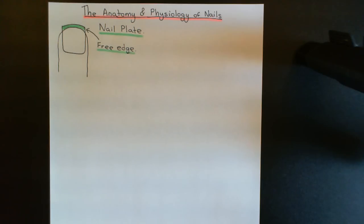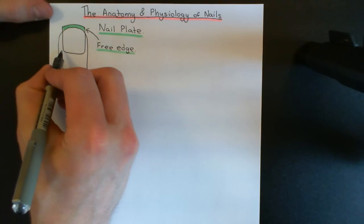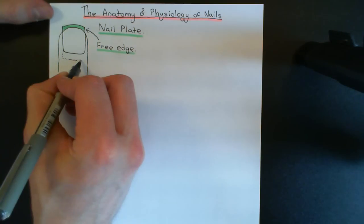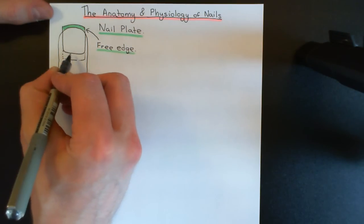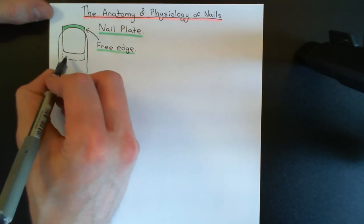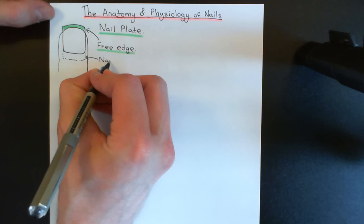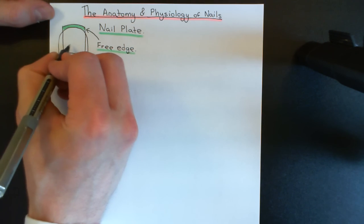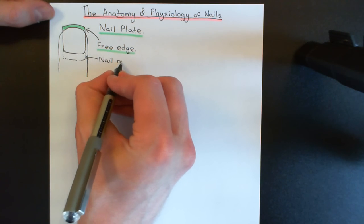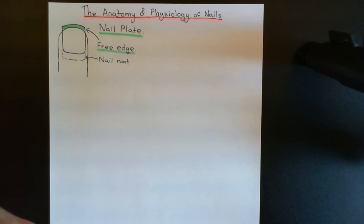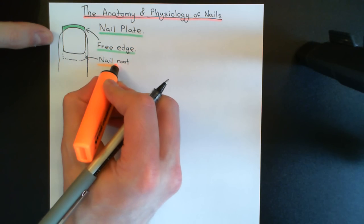Now there's another portion of the nail plate that is not visible, which is called the nail root. The nail root continues on further — the nail plate actually continues on further down underneath this portion of skin that you can't see. So this is the body of the nail plate, this is the free edge of the nail plate, and this is called the nail root — the portion that isn't visible and is covered up by a portion of skin.